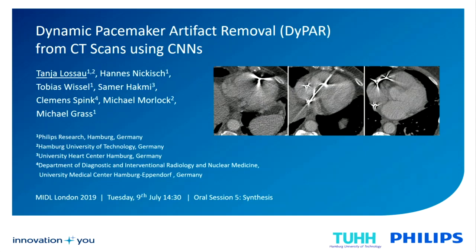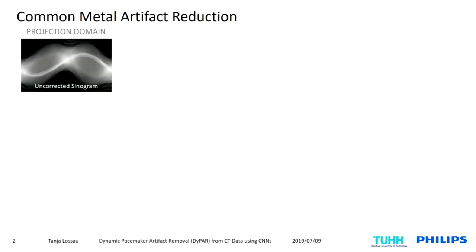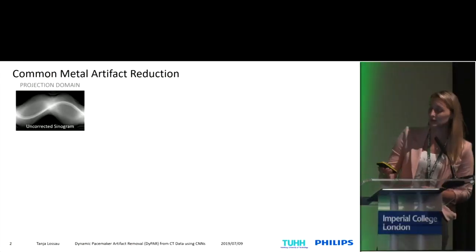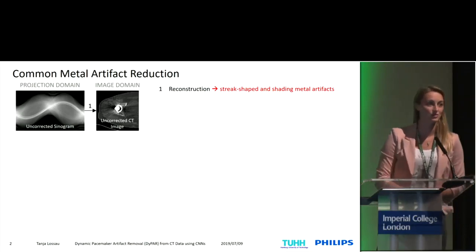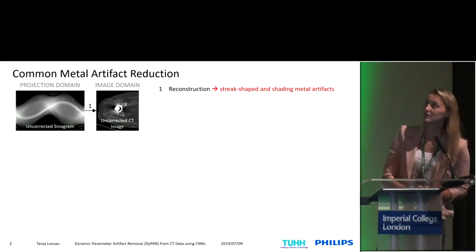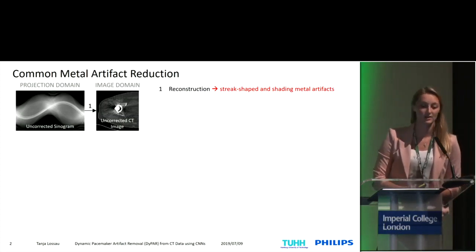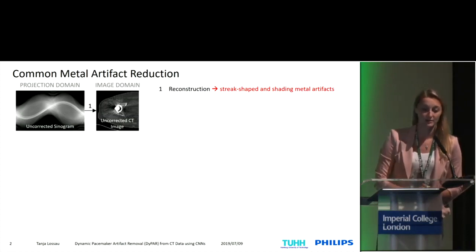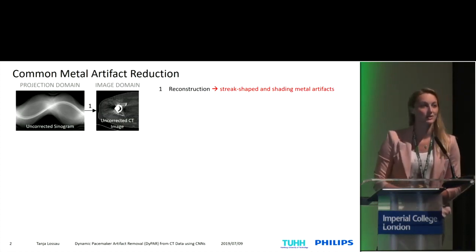Before I start with our approach, which we call DIPAR, let's first have a look at existing typical approaches for metal artifact reduction and why these common methods are not applicable for our case of pacemaker artifact reduction. We will start in the projection domain with the input raw projection data. The first step is a reconstruction of an initial image volume, and you can see these typical streak-shaped and shading artifacts caused by the implanted metal. The neighboring anatomy is not really good visible, which is why we would like to remove such artifacts.